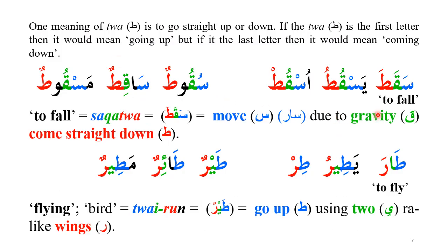The word sakata means to fall — sakata, yakutu, muskut are the three fi'l forms, and sukutun, sakitun, muskut are the three ism forms. Sukutun means falling, sakitun is someone who has fallen, and muskut is the fallen thing. Sakata means to fall because seen means sarah (natural movement) and qaaf means gravity, so: natural movement due to gravity coming straight down. The word torah, where Twa is the first letter, means to go upward — to fly.